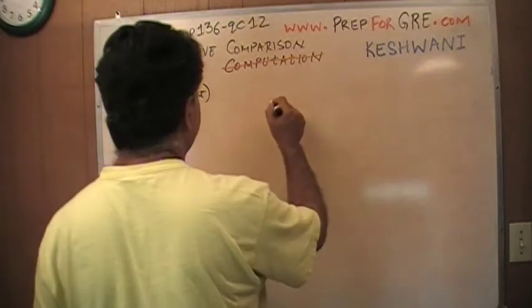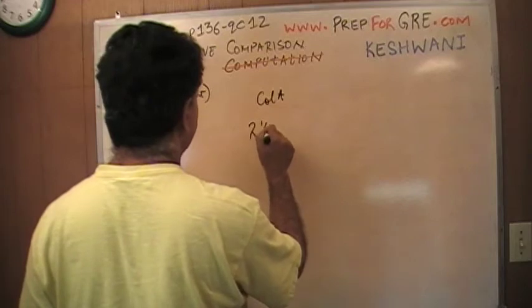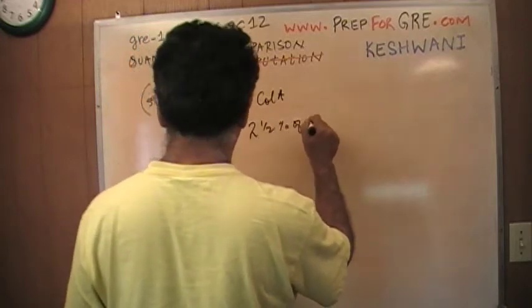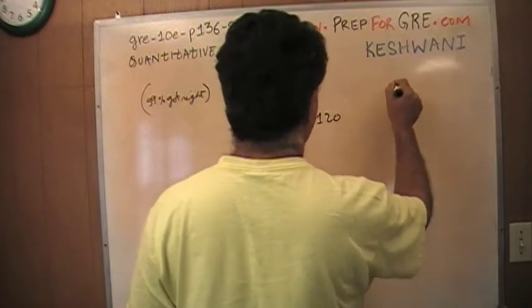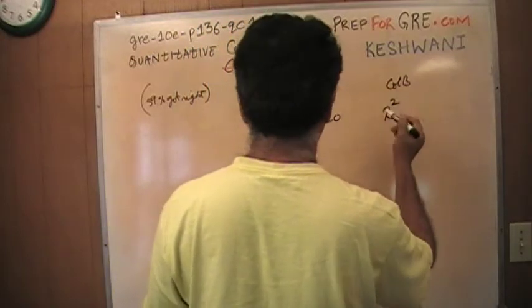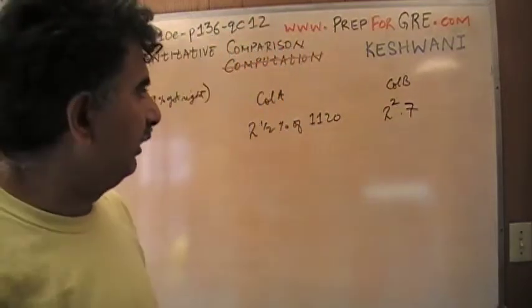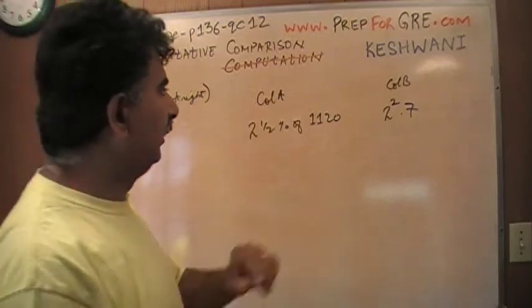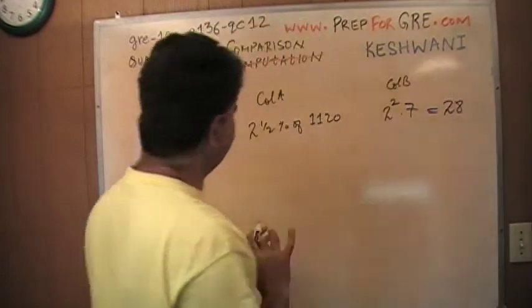In column A, we have 2.5% of 1120. And in column B, I have 2 raised to 2 times 7. Let's take care of column B first, because column B is the simpler one. 2 raised to 2 of course is 4, 4 times 7 is 28. So that's done.